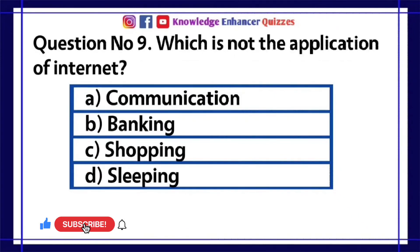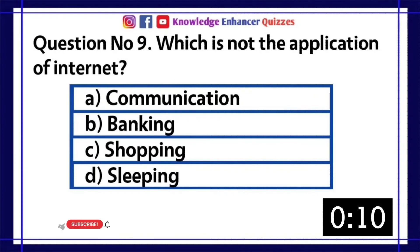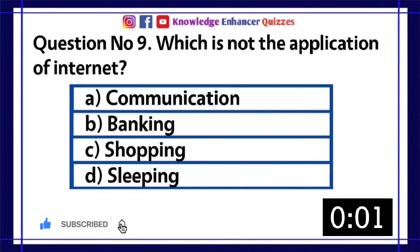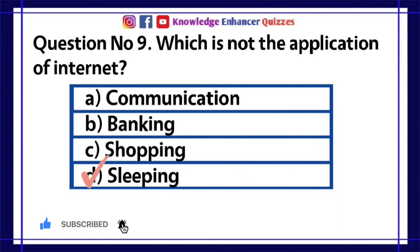Question number 9: Which is not an application of the internet? A. Communication, B. Banking, C. Shopping, D. Sleeping. Option D is the right answer.